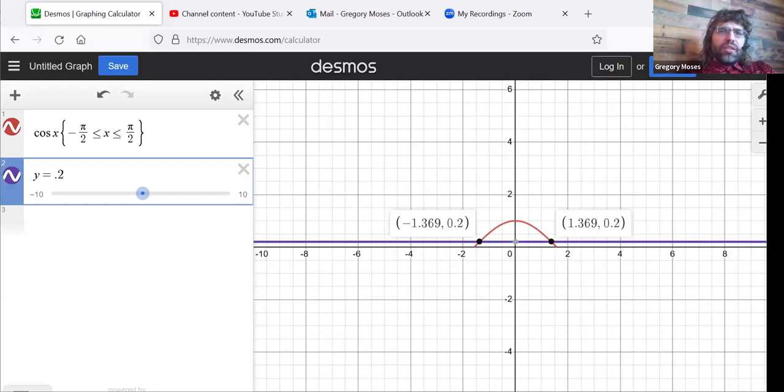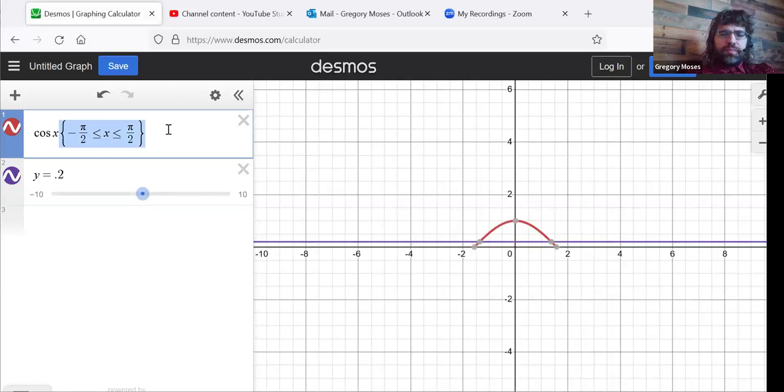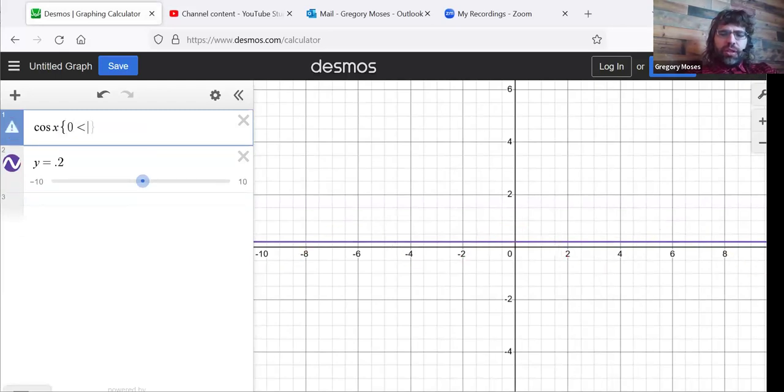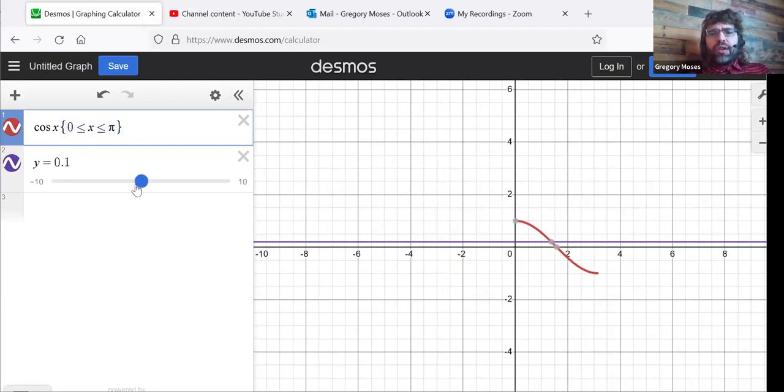So we need a different restriction. So for the cosine, it's going to be x is between zero and pi. If we restrict the cosine to this little interval, now this horizontal line never touches the cosine more than once, and it's one-to-one.